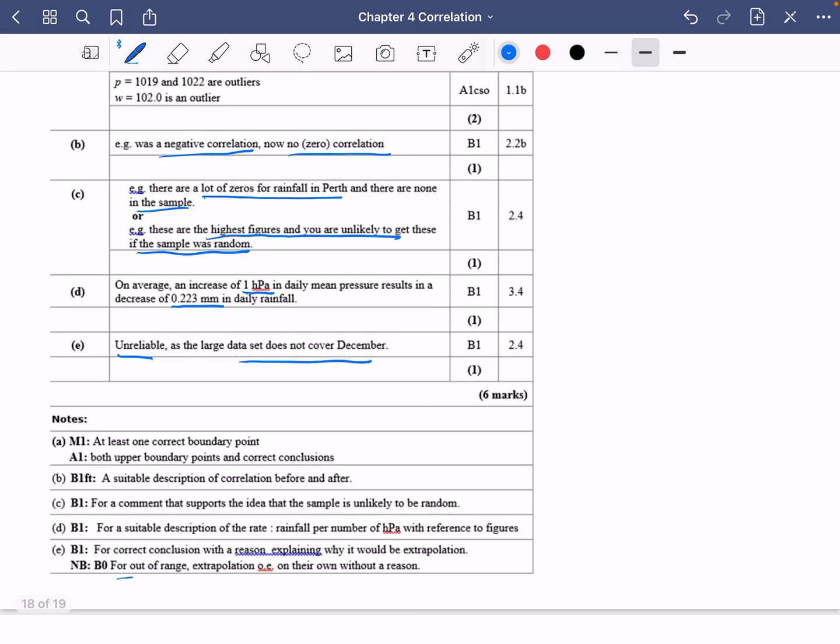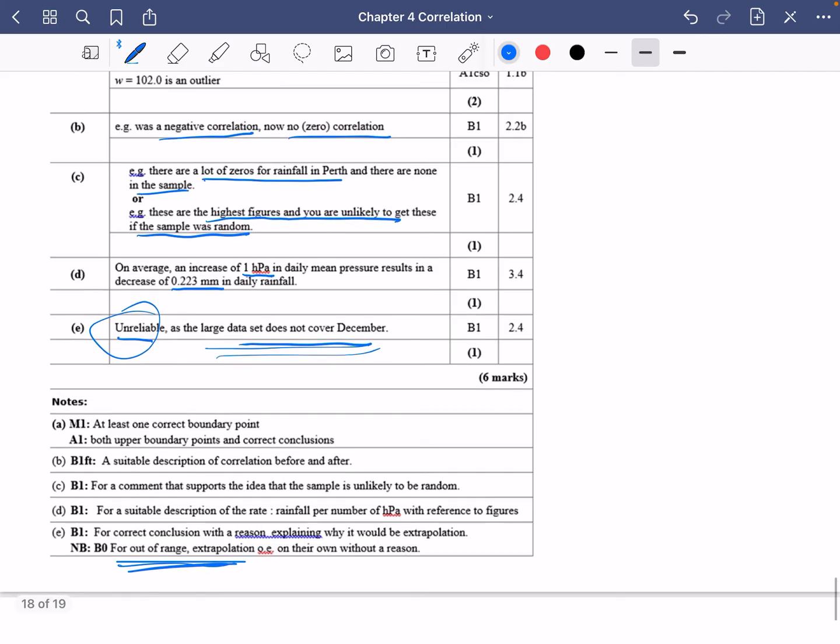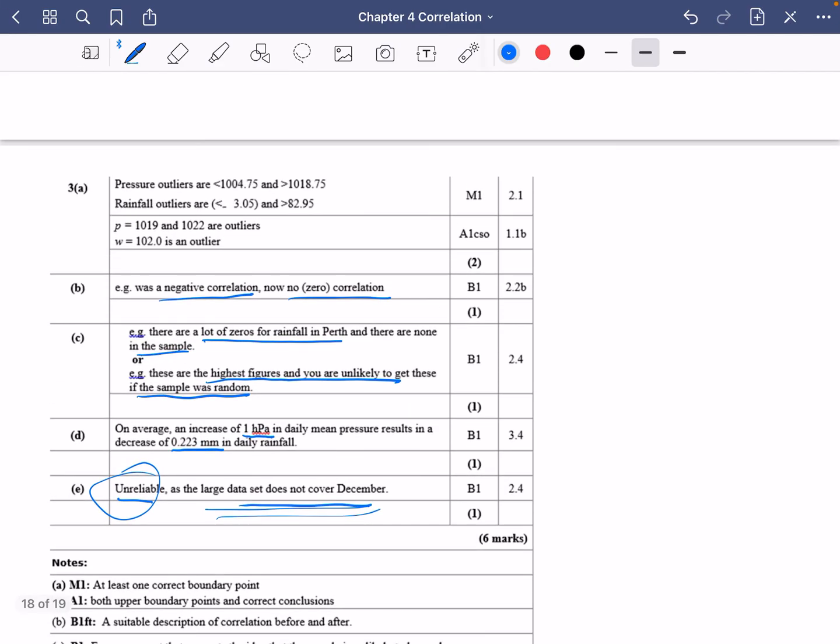So you can't say that it's out of range or extrapolation here but you need to actually because it's technically not extrapolation it's just for a completely different month. So we can't say that it's out of range or extrapolation we need to say that it's unreliable because the large data set does not cover December. Good luck for your studies on this chapter.